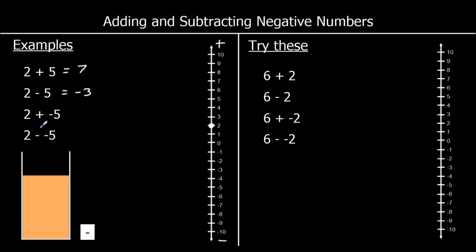For the third one, 2 plus a negative 5 — we're starting at 2 and we have a plus, so we're going up the number line. But how many spaces? Negative 5. Moving up the number line by a negative number of spaces is the same as going down. So I go down by 5 spaces, and that's negative 3.